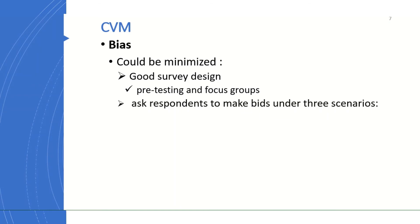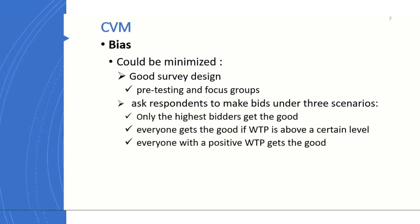The other one is when respondents are making bids, if they are subjected to the following three scenarios, that could also help minimize bias in the contingent valuation method. These are: first, only the highest bidders get the good.